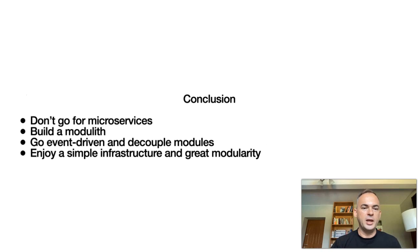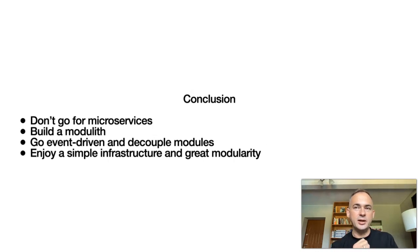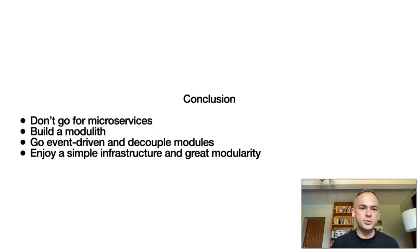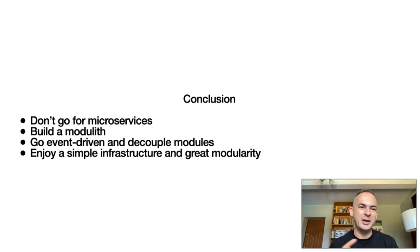Everything is persisted, part of the transaction. If you want, at any moment you can go with asynchronous background jobs — for an event handler that's perfectly fine, and it's still much simpler than going microservices. So don't go for microservices, and limit your asynchronous calls as much as you can. Build a modulith — a monolith with modules — go event-driven, and decouple your modules. Focus on your codebase, not your infrastructure, and enjoy simple infrastructure and growing modularity. Thank you for watching. Let me know if you have any questions — I'd be happy to elaborate. See you later.